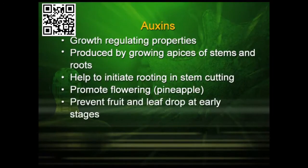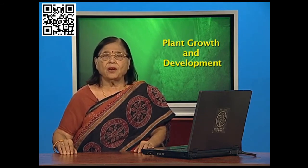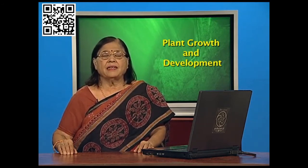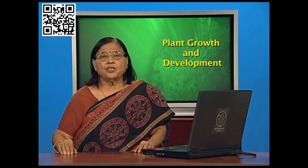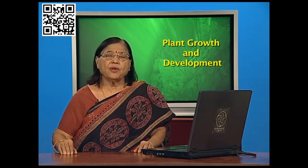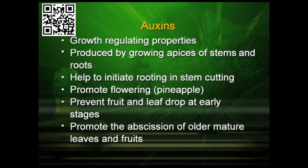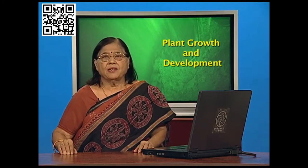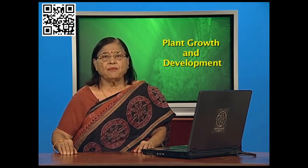Auxins prevent fruit and leaf drop at early stages. If an unripe fruit drops, we cannot eat it; if leaves start dropping unnecessarily, the plant cannot do photosynthesis. So early dropping must be avoided — fruit should drop only when fully ripe, and leaf should drop only when filled with excretory matter. Early dropping of fruits and leaves is stopped by auxins. On the other hand, auxins also promote abscission of older, mature leaves and ripe fruits.